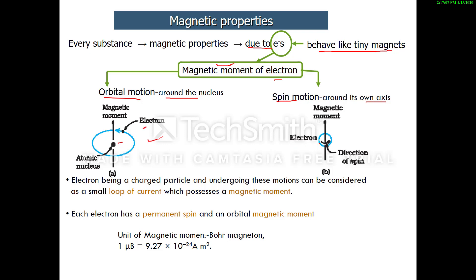In the diagram, this electron is moving around the nucleus, and the spin motion direction is shown. The electron, being a charged particle undergoing these motions, can be considered as a small loop of current. When a charged particle is in motion it behaves as a small current loop and has a magnetic moment. Each electron has two types of magnetic moment: permanent spin magnetic moment and orbital magnetic moment. Magnetic moment is expressed in Bohr magneton; one Bohr magneton equals 9.27 × 10⁻²⁴ A·m².